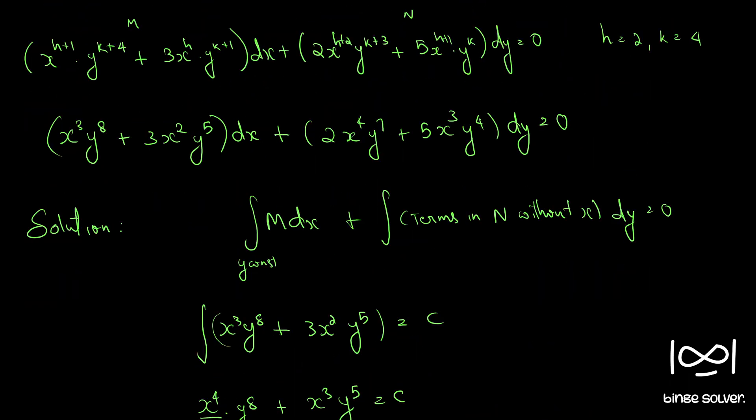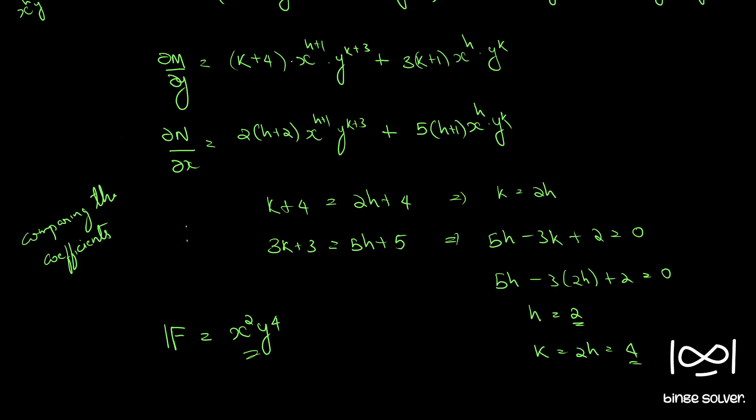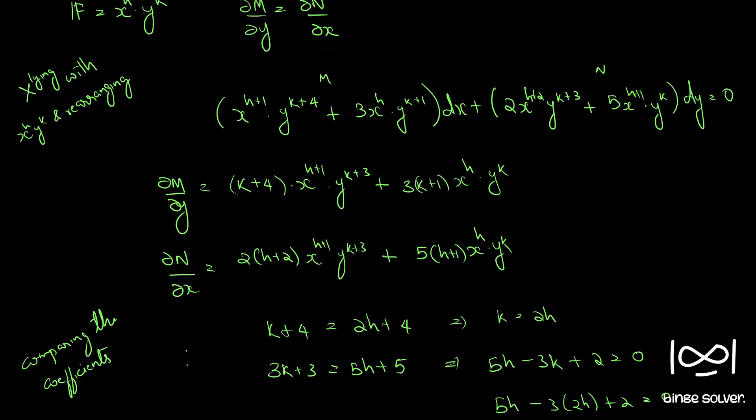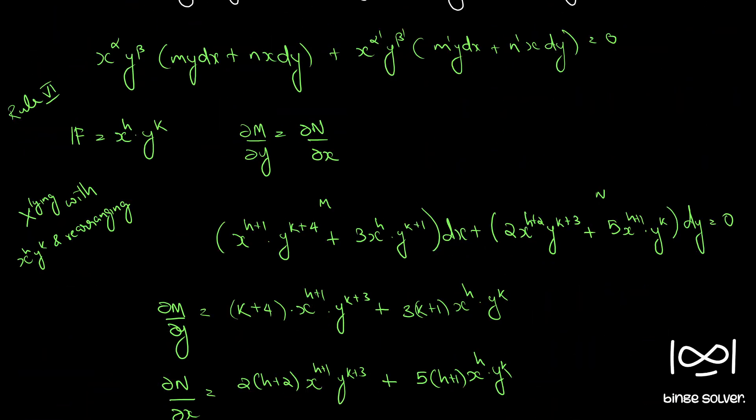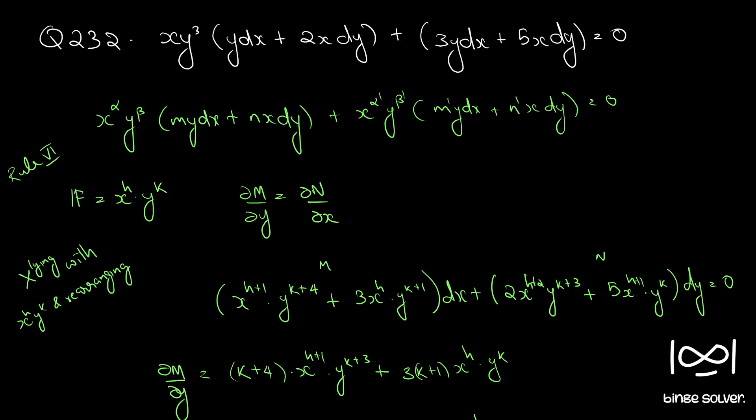These are the steps. We found our integrating factor x squared y raise to 4 using Rule 6. The solution to question number 232 is x cube y raise to 5 into (xy cube plus 4) equal to C.